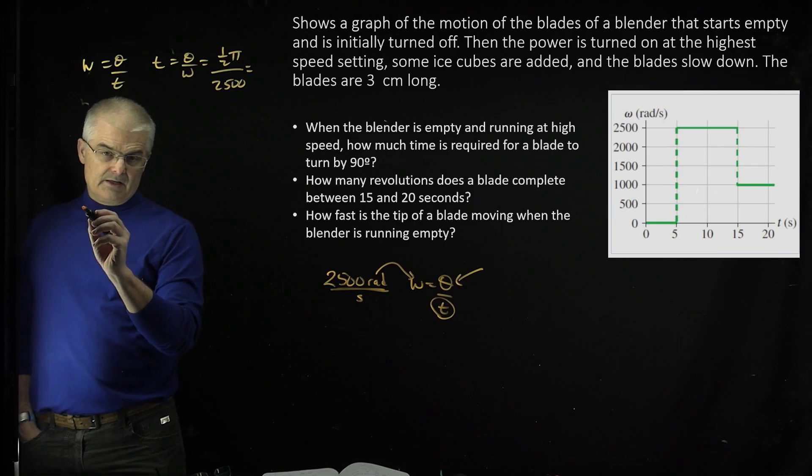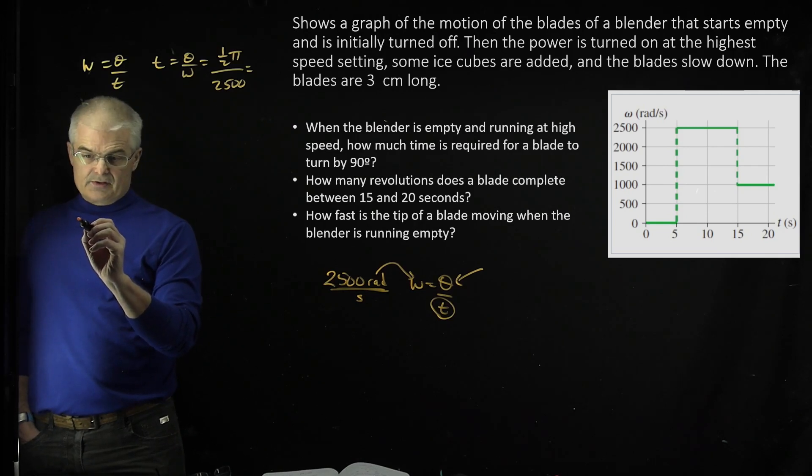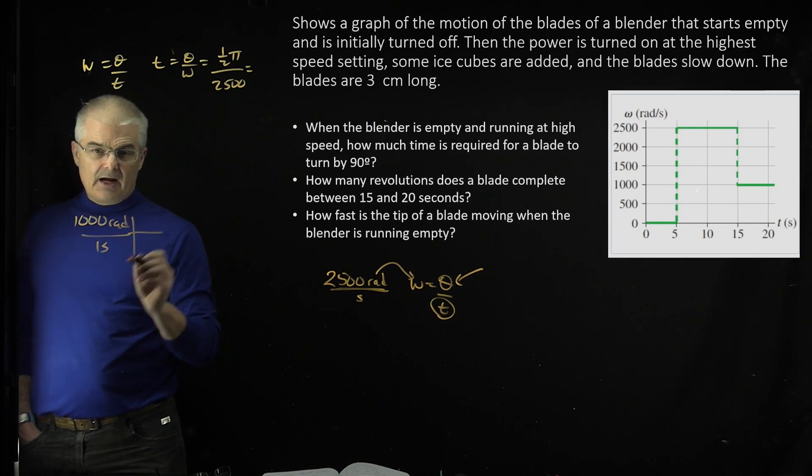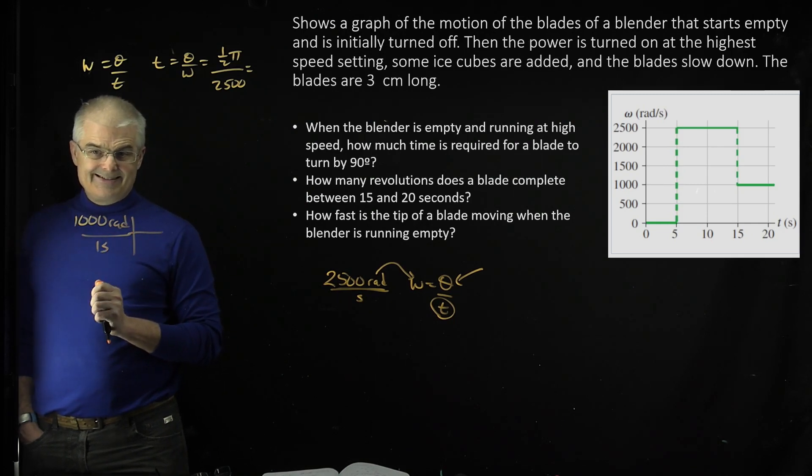So if it's going 1,000 rad/s in every one second, how many revolutions does it do between 15 and 20 seconds?